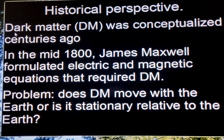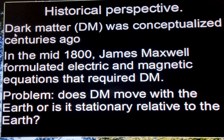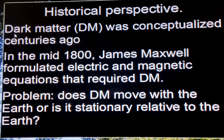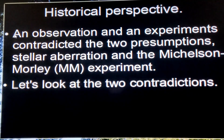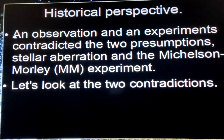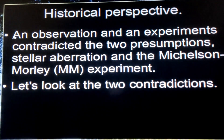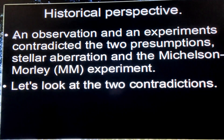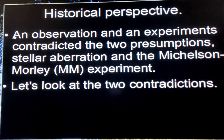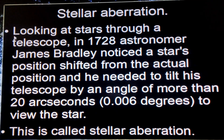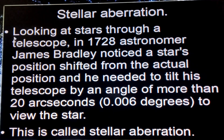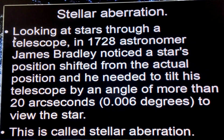The problem was: if dark matter does exist, does it move with the earth, or is it stationary relative to the earth? To answer the question, there is an observation and an experiment, and these two contradict each other. The observation is called stellar aberration, and the experiment is called the Michelson-Morley experiment.